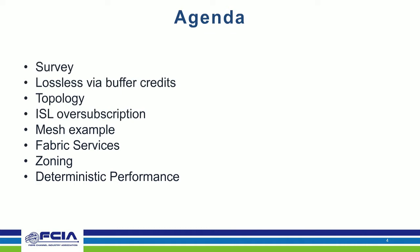First, we ran a survey asking Fiber Channel experts within our companies about different Fiber Channel capacities they know and whether their customers know details about Fiber Channel. We'll then talk about what makes Fiber Channel a lossless protocol — specifically its buffer credits. We'll cover topology, ISLs and ISL over-subscription, culminating with a big mesh example. Then Brandon will cover fabric services, zoning, and deterministic performance.